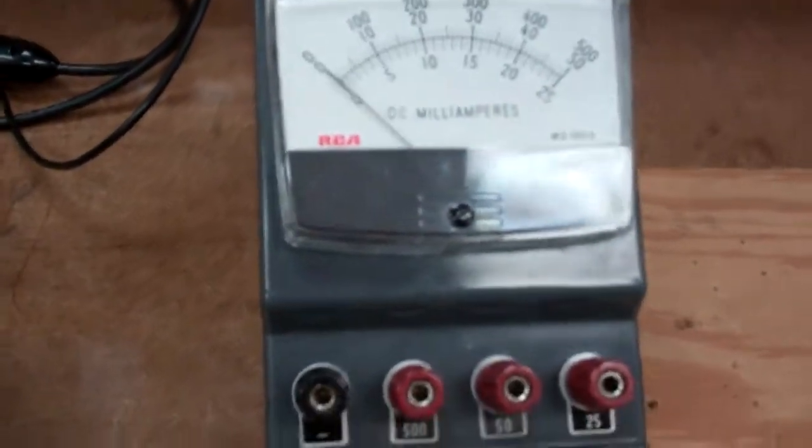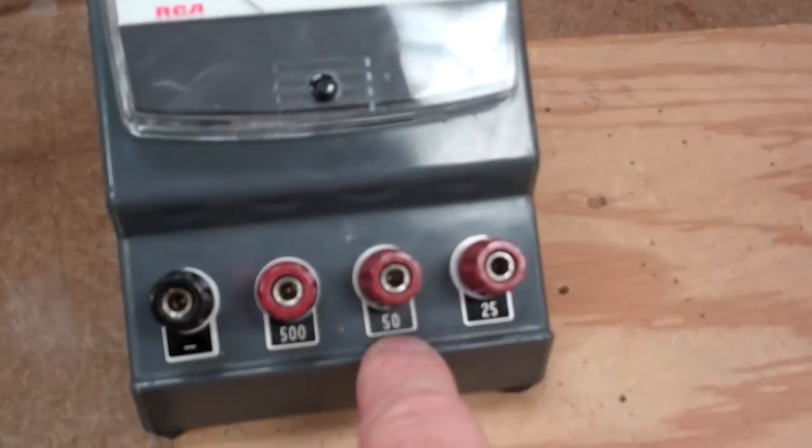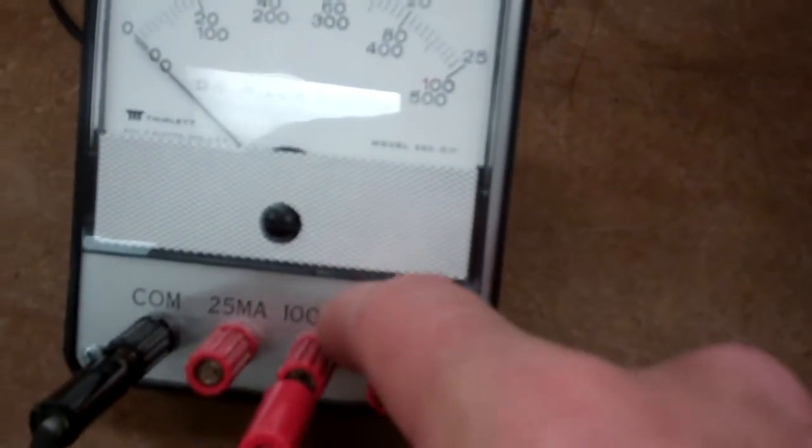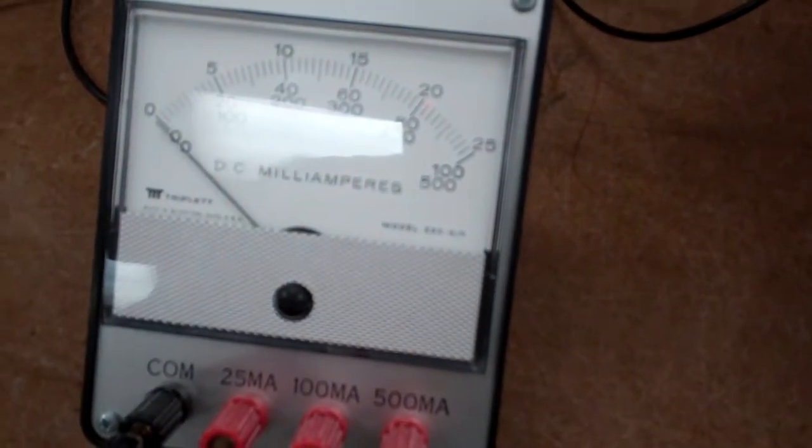There's no difference really. Again, this has a 50 milliamp range versus this that has 100. I'd really recommend the triplet simply because it has a greater range here in this middle, which is kind of nice to know.